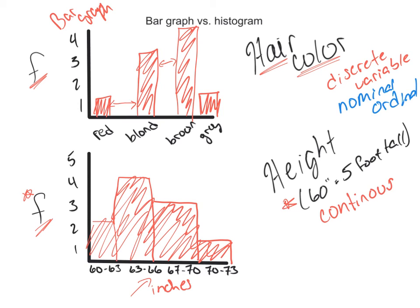This is using more of the scale data — ratio data and interval data. Because this could be salary, height, weight, age, how much you have in your bank account, or how much you have in the stock market. Ratio and interval data variables use histograms, while nominal and ordinal data use bar graphs. The big difference visually is that with a bar graph you have that space between adjacent bars, but with a histogram you don't.